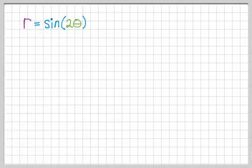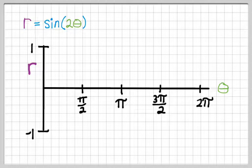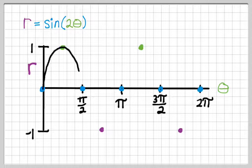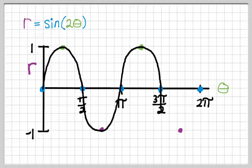I'm going to start doing this in maybe not the way you would expect. I'm going to start by actually graphing this rectangularly, where I've put r on the vertical axis and theta on the horizontal axis. I'm assuming you know how to graph r equals sine of 2 theta. If you don't, you should look that up, because we're going to need to be able to do that.